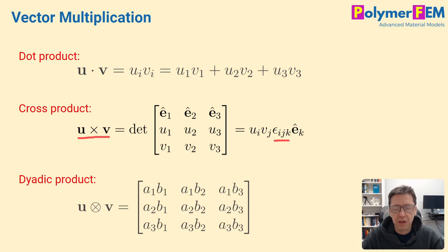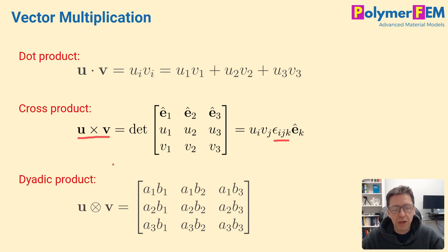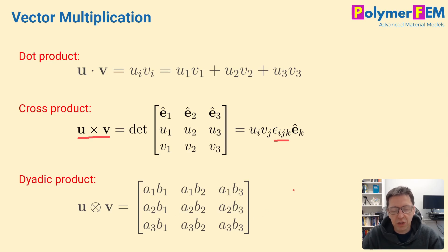The last type of vector multiplication I'll discuss is the dyadic product. You can create the dyadic product of two vectors, and it becomes a second-order tensor — a three-by-three matrix with components as shown. This is a handy quantity to use in many cases.